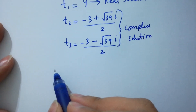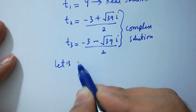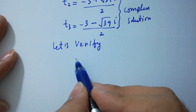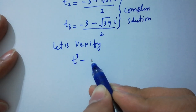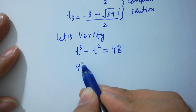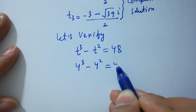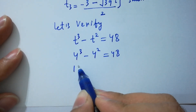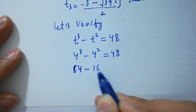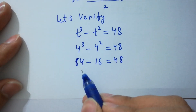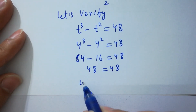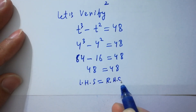Now let's verify. Substituting t = 4 into t³ - t² = 48: 4³ - 4² = 64 - 16 = 48. Left-hand side equals 48, which equals the right-hand side. Verified!